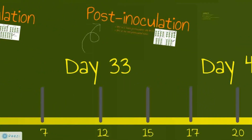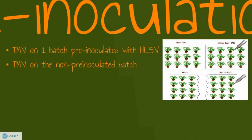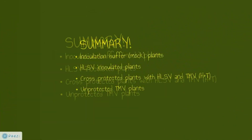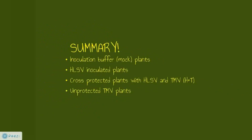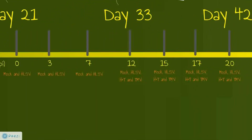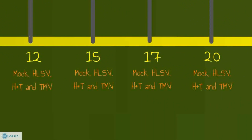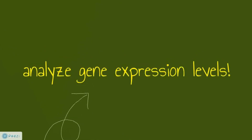On 12 DPI, we inoculated TMV on one batch pre-inoculated with HRSV, and on the batch left untouched on zero DPI. In summary, we obtained four different batches of plants: mock virus inoculated plants as our negative control, HRSV inoculated plants, cross-protected plants inoculated with both HRSV and TMV, as well as TMV inoculated plants. We then proceeded to extract total RNA from mock and HRSV inoculated plants on these days, as well as the cross-protected and unprotected plants on these days. We then made use of reverse transcription real-time PCR to quantify the mild viral RNA in the plants and determine the relative expression of the three genes.